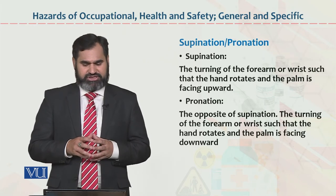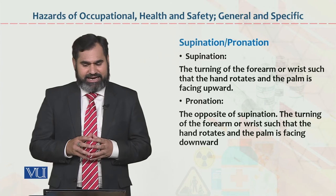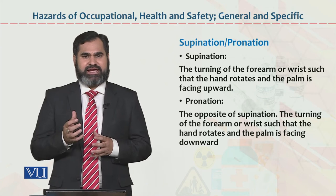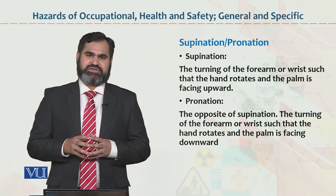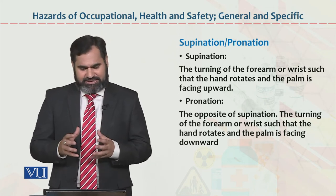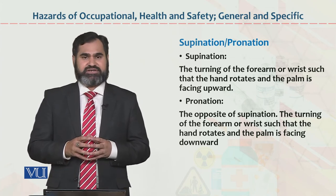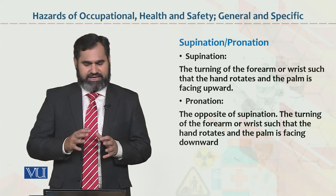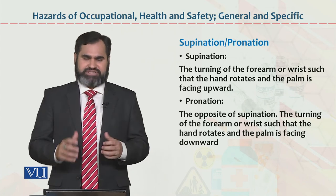Supination and pronation. Supination: the turning of the forearm such that the hand rotates and the palm is facing upwards. Hands ko aap move kar rahe hain, rotate kar rahe hain — is ko log supination bolte hain. Pronation is the opposite of supination — the turning of the forearm such that the hand rotates and the palm is facing downwards. Agar ye palm ko upward rakhen ge toh ye supination, aur agar is ko downward karen ge toh ye pronation. Ye dono concepts ka ta'aluq bhi aap ke biomechanics ke saath aur inki movements ke saath hai.